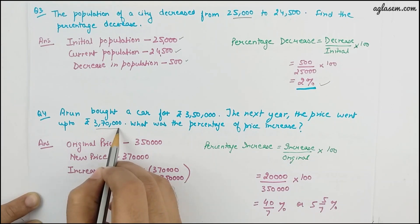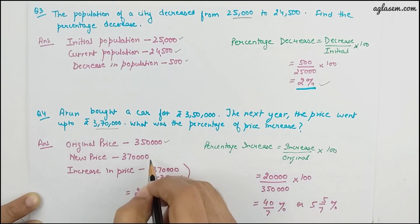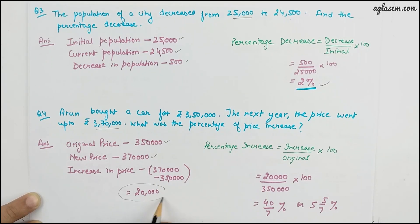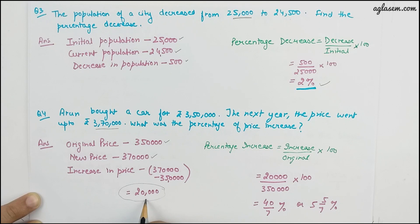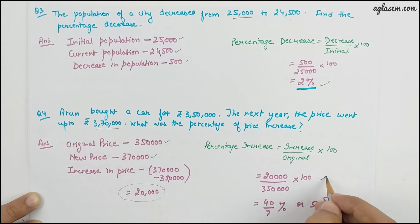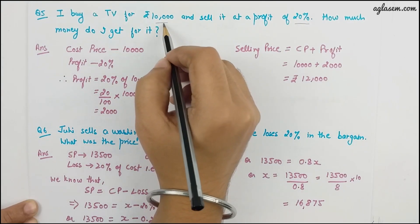Question 4: Arun bought a car for 3,50,000 rupees and the next year the price went up to 3,70,000. The increase in price is 20,000. Percentage increase is 20,000 divided by 3,50,000 multiplied by 100, giving 40/7 percent, that is approximately 5 and 5/7 percent as the increase in price.